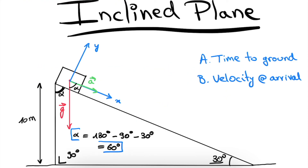This brings us to the end of this video. I hope you are now more familiar with how to solve two-dimensional kinematics exercises of objects sliding down an inclined plane. We saw that we can reduce these exercises to one-dimensional kinematics by choosing our coordinate system wisely. If you have any questions, please let me know in the comments. If you learned something, give the video a thumbs up, consider subscribing, and I'll see you guys in the next one.